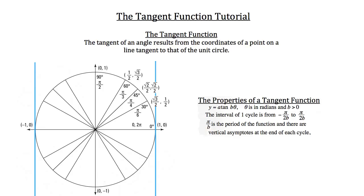We want to draw in an angle to refer to, so I'm going to create a 30-degree angle in standard position. You know how to find the values of the point on the unit circle — the cosine is the x-coordinate, so the cosine of 30 degrees is root 3 over 2, and the sine of 30 degrees is 1/2, which is the y-coordinate of that point.